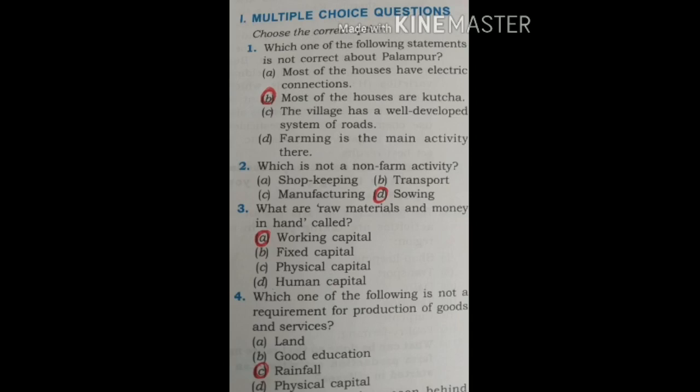Question 4: Which one of the following is not a requirement for production of goods and services? The four options are: Land, Good education, Rainfall, and Physical capital. The correct option is C — Rainfall.